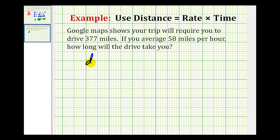So again, the formula is distance equals rate times time. Well, 377 miles would be the total distance traveled. So now we're given D, 377.